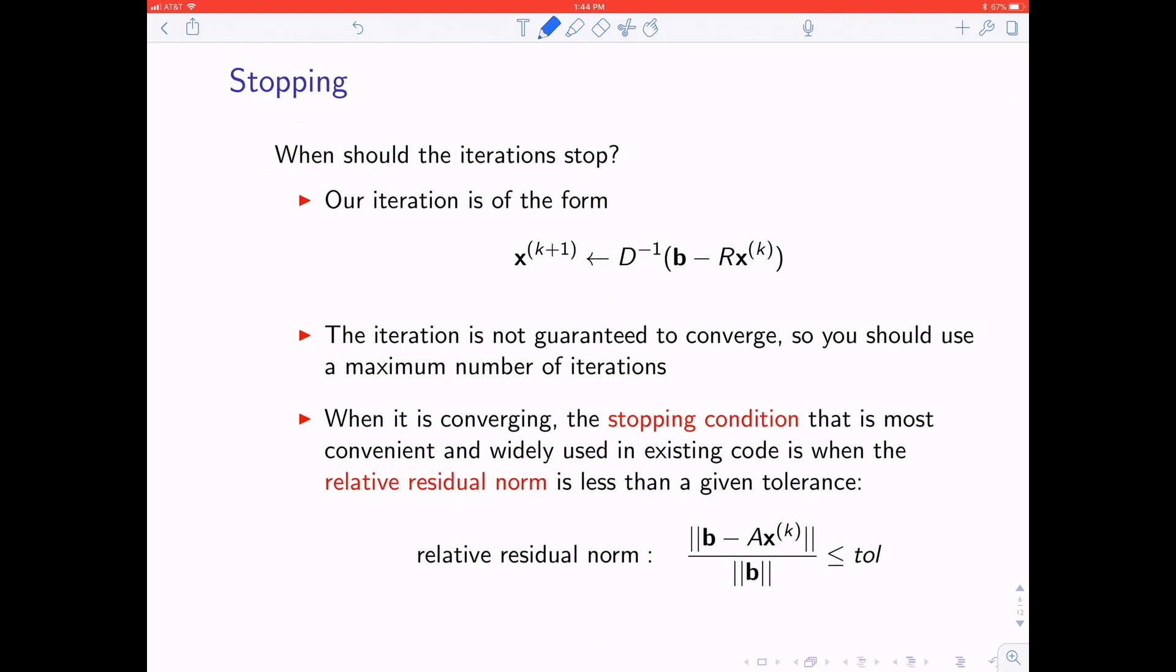If you have an iterative method, you have to decide when it stops. The iteration is not guaranteed to converge, so you always should use a maximum number of iterations. Even when it is converging, you need a stopping criterion. The usual stopping criterion is the relative residual norm or the relative backward error, where you compute the residual between the B vector and A times your X, and divide by the norm of B to make it a relative value. You insist that relative residual norm is less than some tolerance you specify.